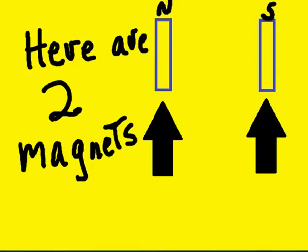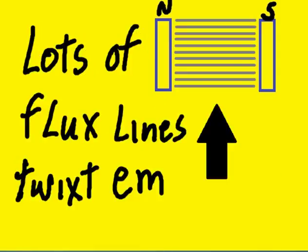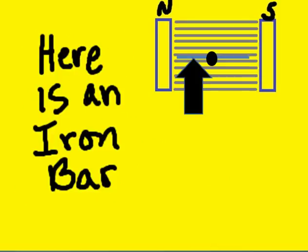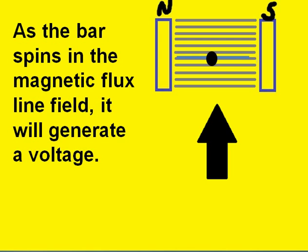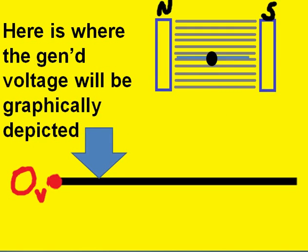Here are two magnets. Lots of flux lines twist them. Here's an iron bar. As the bar spins in the magnetic flux line field, it will generate a voltage. Here is where the generated voltage will be graphically depicted.